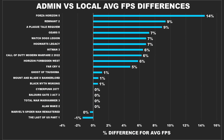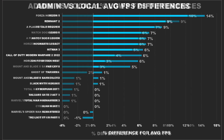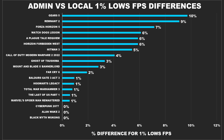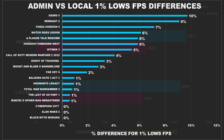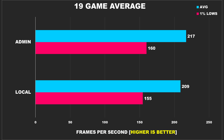I mentioned I benchmarked 19 games, and the reason we didn't go over all of them is because they hardly showed any performance difference at all. Looking at the graphs showing differences in average FPS and 1% lows, performance barely changed — we're talking single-digit deltas where the user wouldn't be able to perceive those changes anyway.